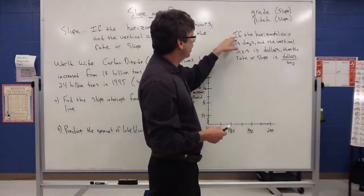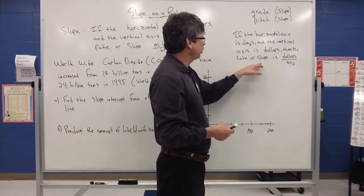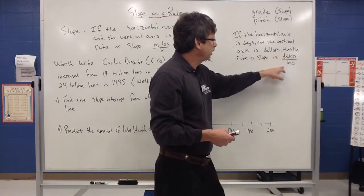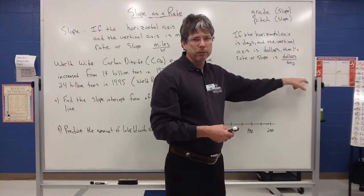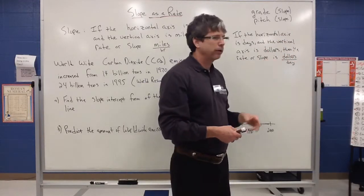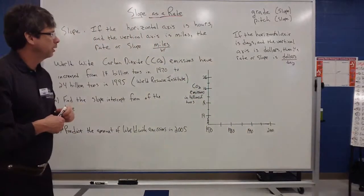If the horizontal axis is in days and the vertical axis is in dollars, then the rate or slope would be considered dollars per day. Any kind of time it's written like that, that is kind of slope language, but also that's our rate language. You know, dollars per day, some of us may work dollars per day, so that's our rate of pay.